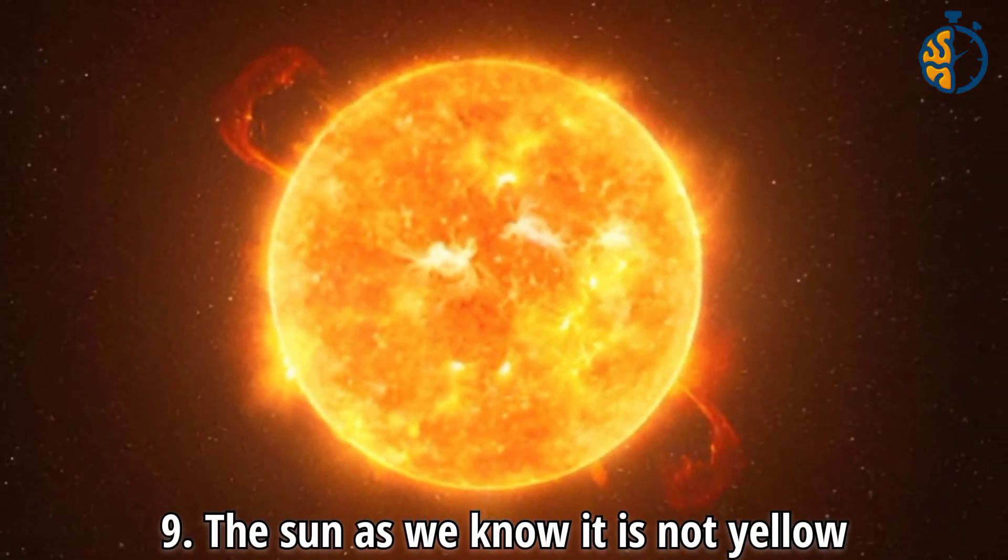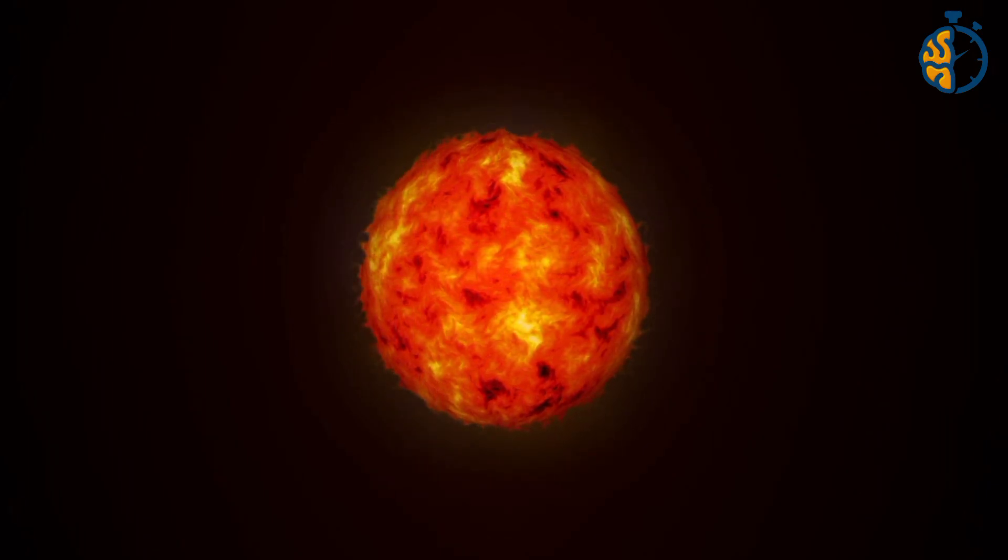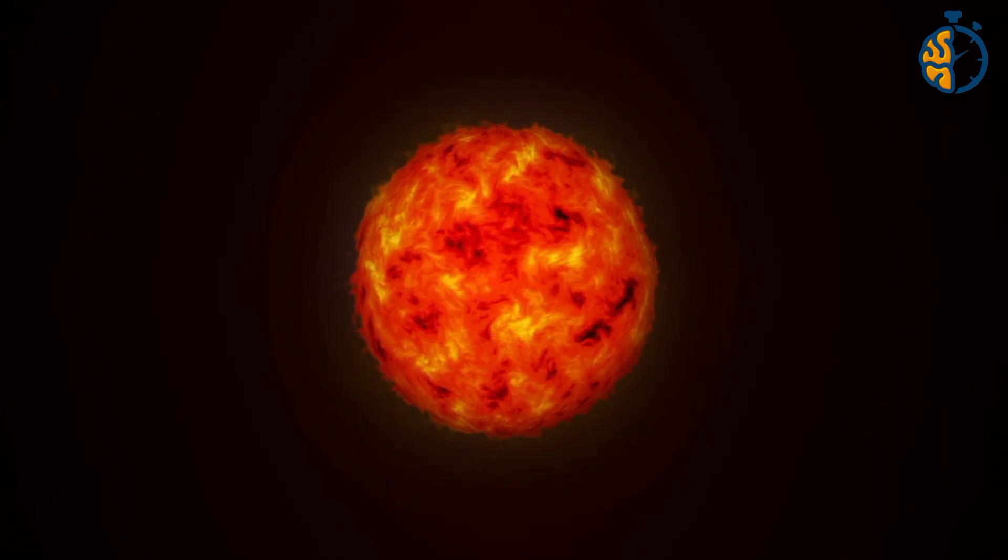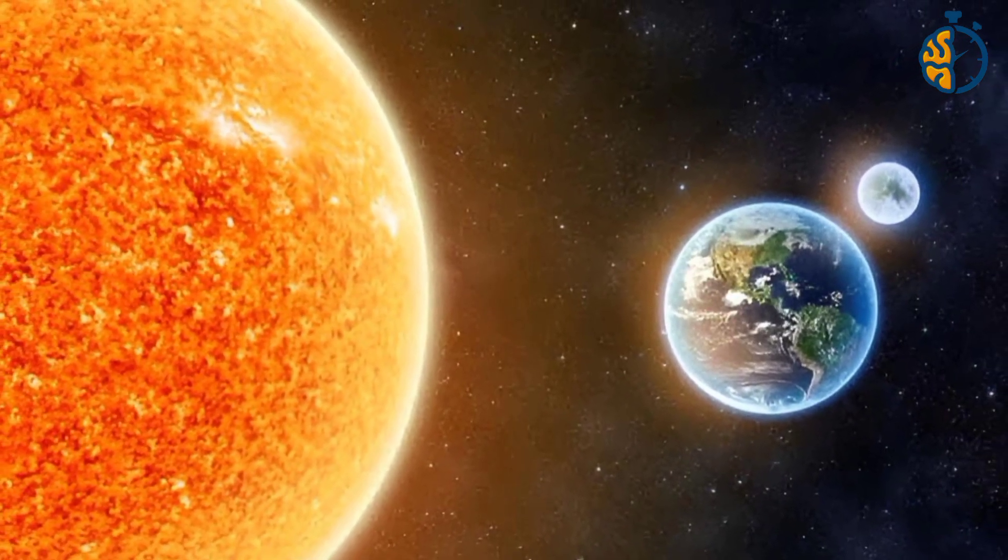Number 9. The sun as we know it is not yellow. In fact, if you ask any ordinary person about the color of the sun, he will tell you without hesitation that it is yellow. But did it occur to you that this is not the true color of the sun?